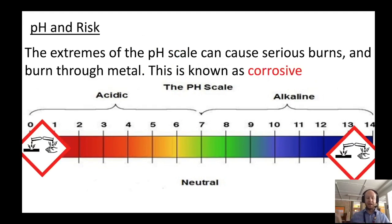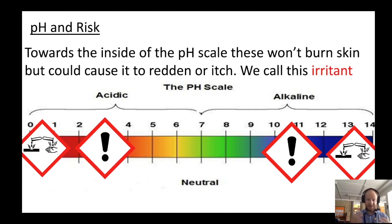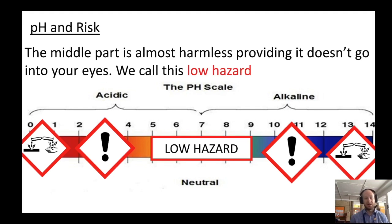At the very edge of our pH scale, these acids and alkalis can cause serious burns and can burn through metal. We call this corrosive, and they have a specific warning label. Moving inwards on the pH scale, these substances won't burn the skin but could cause it to redden or itch, and can be very dangerous to the eyes — this is called irritant, and they have a different warning label. The middle part is almost harmless and, as long as it doesn't go into your eyes, we call this low hazard.